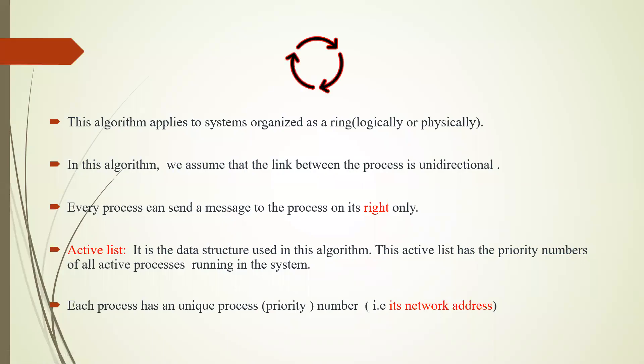This algorithm applies to systems organized as a ring. The ring may be organized either logically or physically. In this algorithm, we assume that the link between processes is unidirectional — every process can send a message to the process on its right side only, that is, in the clockwise direction.